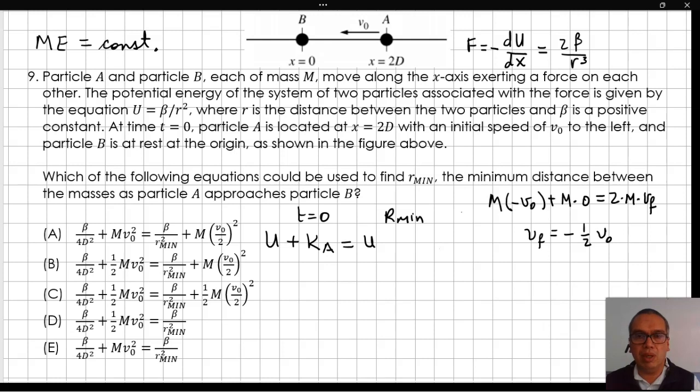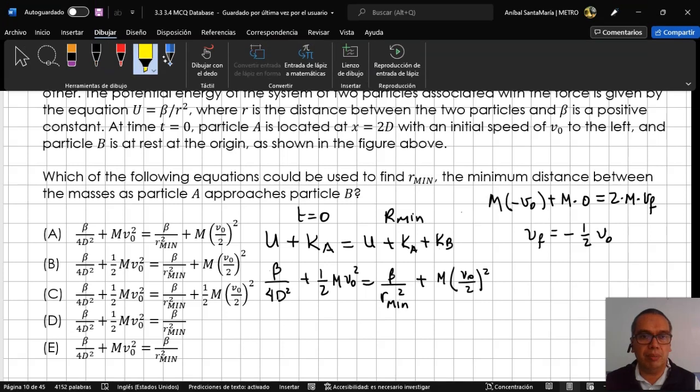So the final mechanical energy is made up of the potential energy of the system plus the kinetic energy of each of the particles, A and B. Substituting the formulas in the equation of conservation gives us beta over 4d squared plus one half m v0 squared equals beta over r min squared plus m times v0 over 2 squared, because we have the same amount of kinetic energy for each of the particles. Clearly, we are talking about option B.